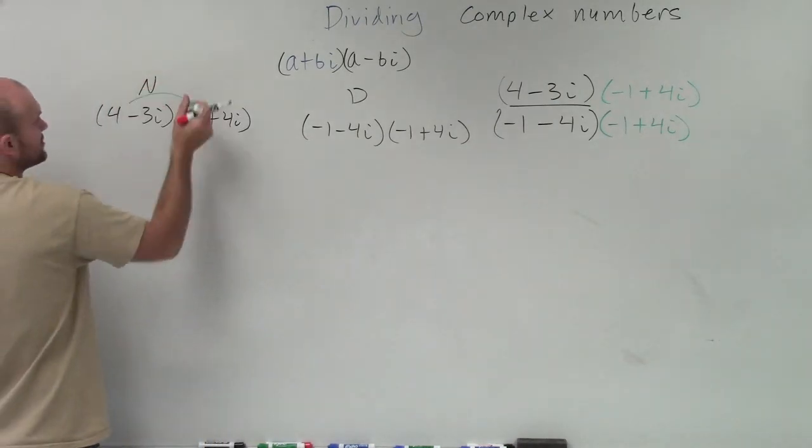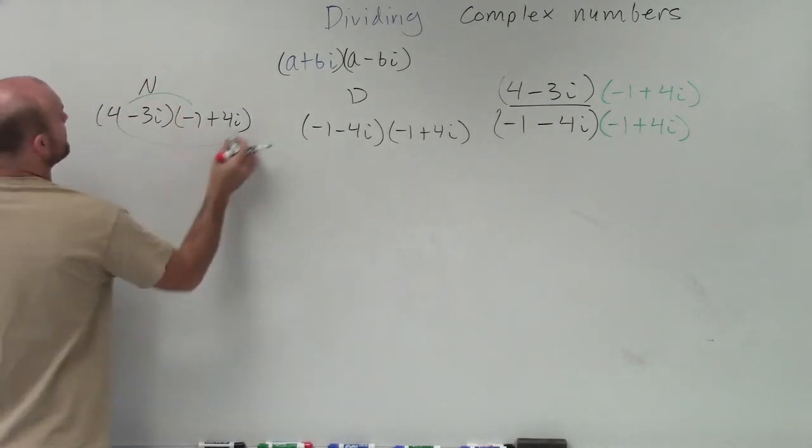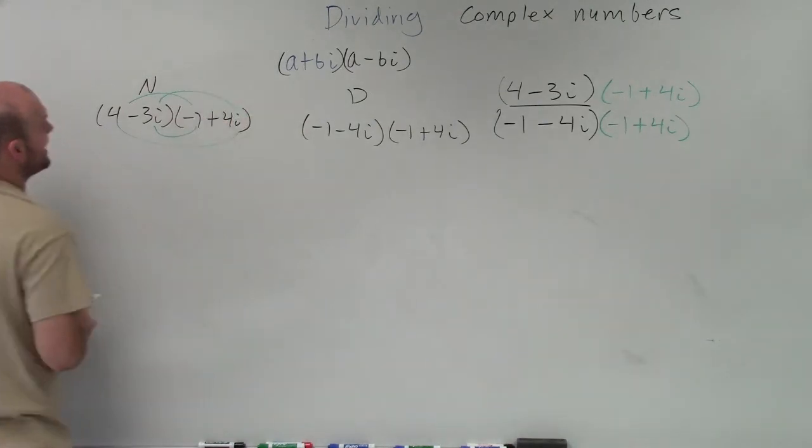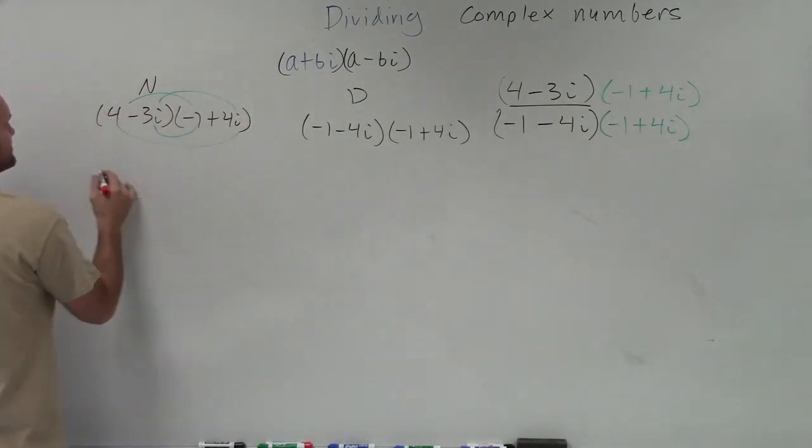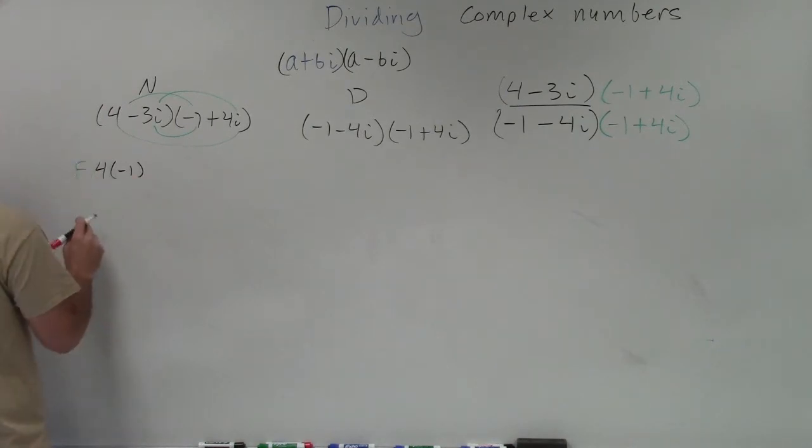So by FOIL, I multiply the first two terms. My first two terms, my outer, my inner, and my last. So therefore, the first term is 4 times negative 1. So I'll do first, outer, inner, last.